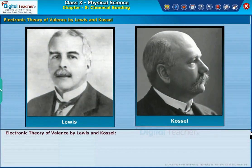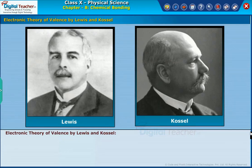Let us learn about the scientific theory on chemical bonding based on valence electrons. It is called the Electronic Theory of Valence, proposed by Lewis and Kossel.